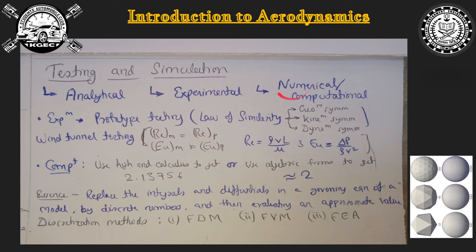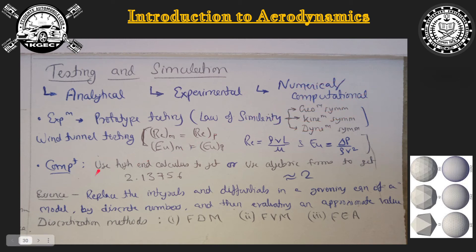The third approach is the numerical or computational approach. In this method, we create a mathematical model of the physical object being tested, apply all the physical parameters, and test it using governing equations. This creates a computational model of our physical design which we then test numerically.